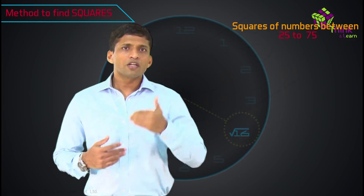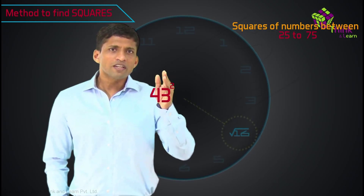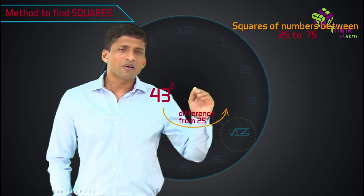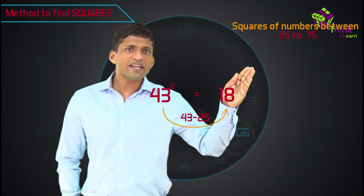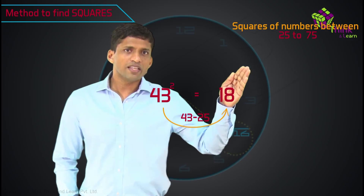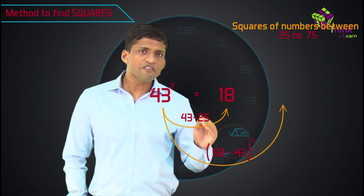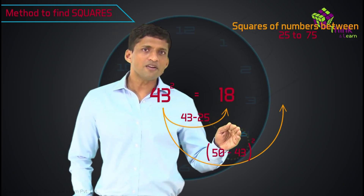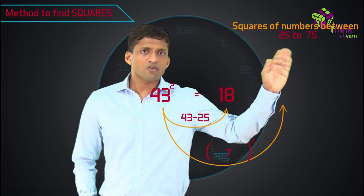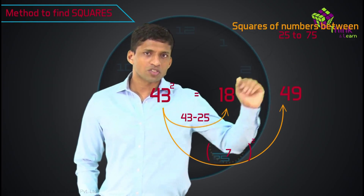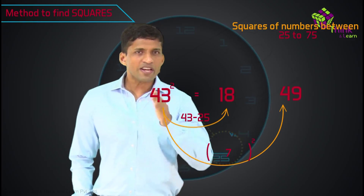Let me take one more example. To find 43 square, take the difference from 25, that is 43 minus 25, so you get 18 as the first two digits. Then take the difference from 50: 50 minus 43 is 7. Take the square of that, you get 49 as the last two digits. So 43 square is 1849. Very simple!